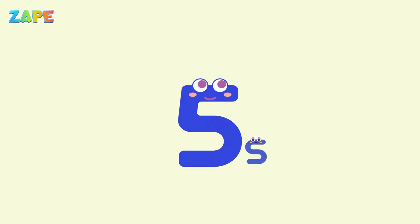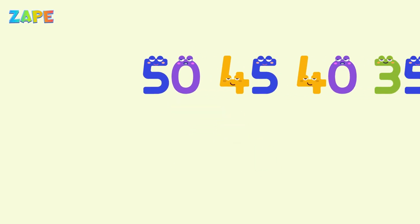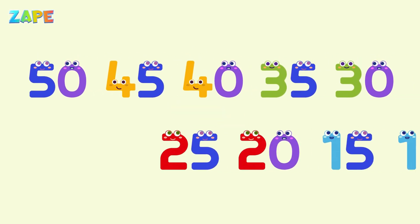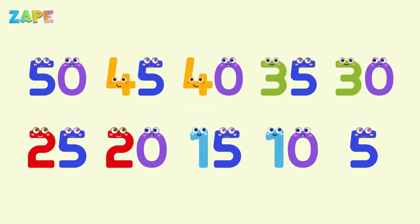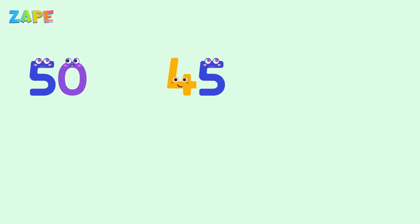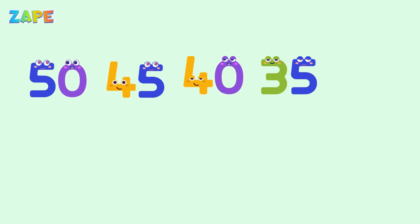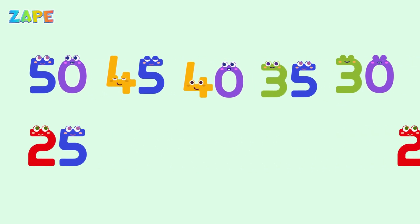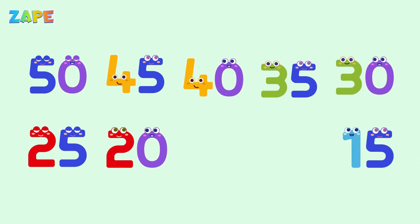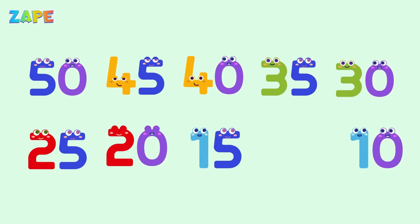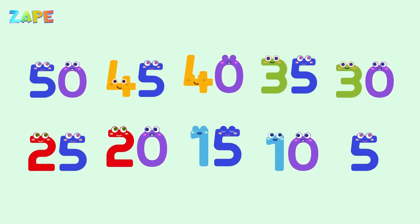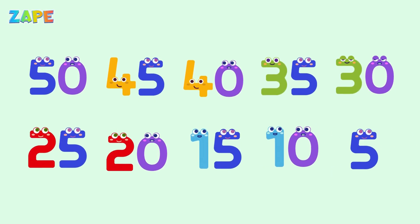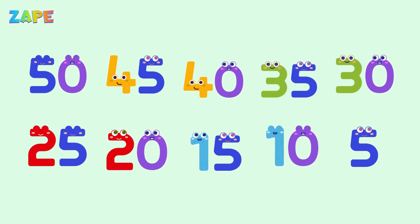Now let's count backward by fives. Each time we go back by five. Let's count. 50, 45, 40, 35, 30, 25, 20, 15, 10, 5. Awesome. That was backward counting by fives.